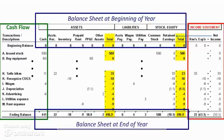The cash column on the balance sheet contains all the information for the statement of cash flows. So you can see this really is the expression of the linkages between all three financial statements.